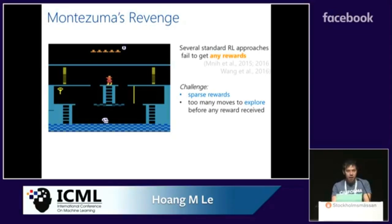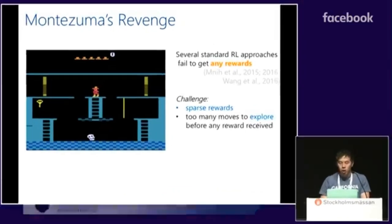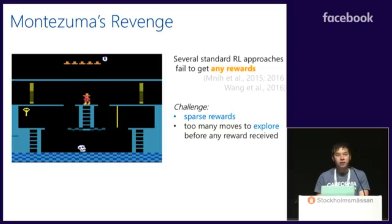To start off, it is perhaps well known that many popular reinforcement learning methods have a tough time learning certain tasks, especially those with long horizon and sparse rewards. A prime example of this is the Atari game Montezuma's Revenge. A one-sentence summary of why this task is challenging is that the learner has to explore too many moves before any positive reward can be attained. One possible way to overcome this challenge is to learn from expert feedback, which is also known as imitation learning.